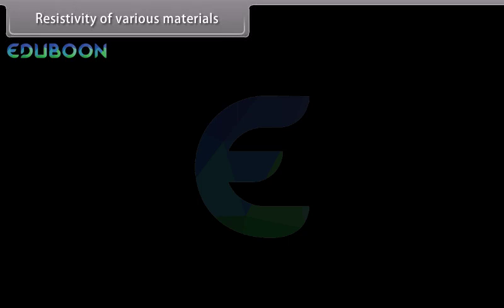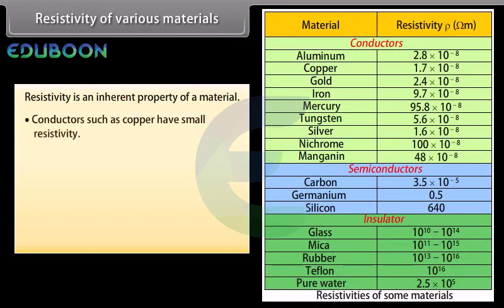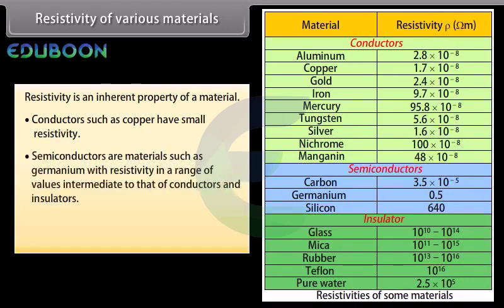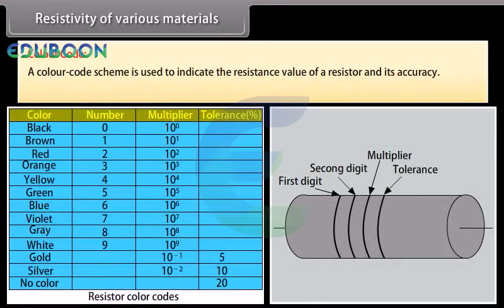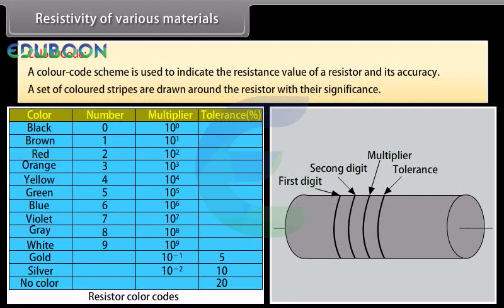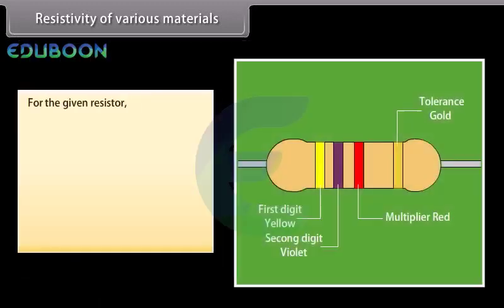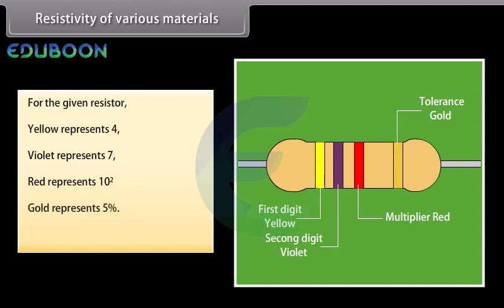Resistivity of various materials: Resistivity is an inherent property of a material. Conductors such as copper have small resistivity. Semiconductors such as germanium have resistivity intermediate between conductors and insulators. Insulators such as rubber have large resistivity. Colour code: A colour code scheme indicates the resistance value and accuracy of a resistor using coloured stripes. For example: Yellow = 4, Violet = 7, Red = ×10², Gold = 5% tolerance. Total resistance = 47 × 10² ohm with 5% tolerance.